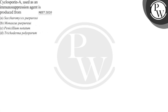Hello, let us read the question. The question says, cyclosporine A used as an immunosuppression agent is produced from: A. Saccharomyces purpureus, B. Monascus purpureus, C. Penicillium notatum, D. Trichoderma polysporum.